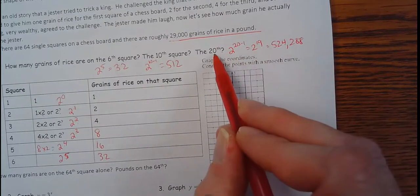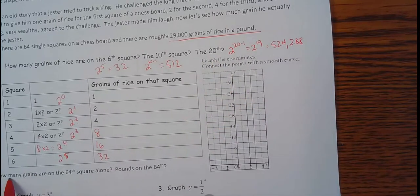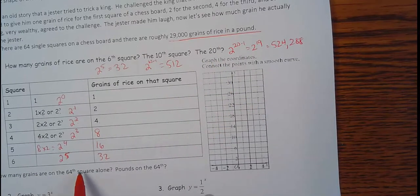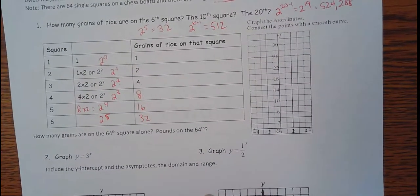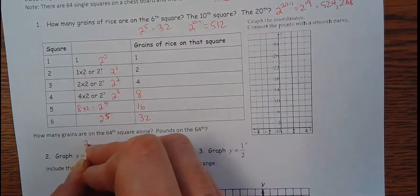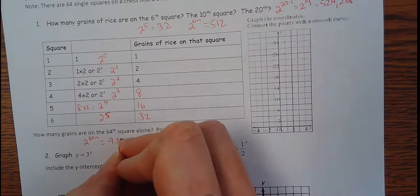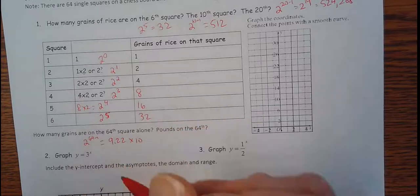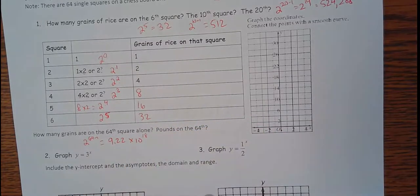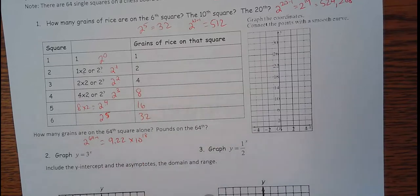That's just the 20th square. Now what's happening here, that's going pretty fast. Going down here, how many grains of rice are on the 64th square alone? So the last chessboard square that's going to have the most rice on it. That'd be two to the 64 minus one. Type that in a calculator and it's 9.22 times 10 to the 18th power. That's just on that last square of rice.